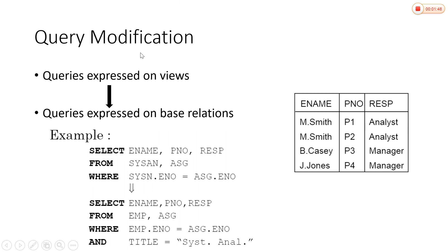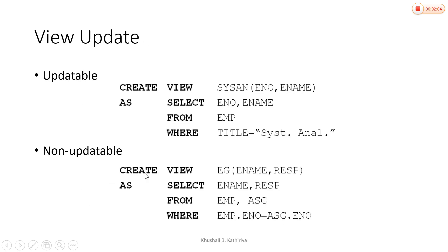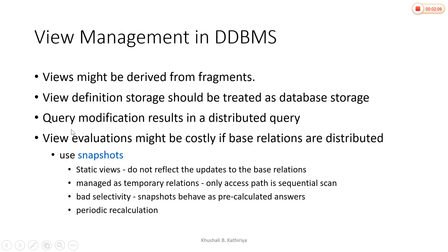In centralized systems we discussed query modification. For example, where employee number equals M_AST dot employee, we add another condition such as title is equal to a certain value, effectively updating and modifying the query. Similarly, in a distributed environment we can also modify our queries.